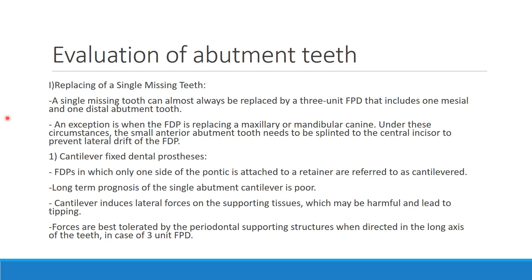Evaluation of the abutment teeth. First, we are going to talk about the replacement of a single missing tooth. This usually involves giving a three-unit FPD. We will take support from both sides of the missing span, so we will have one mesial and one distal abutment tooth.